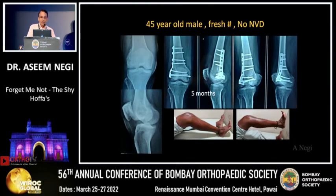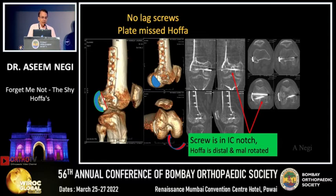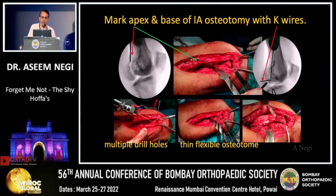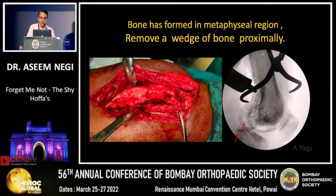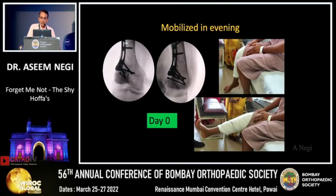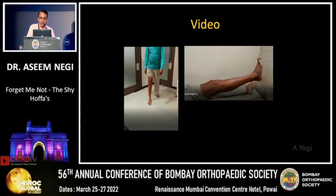A 45-year-old male — same story. No lag screws for the Hoffa, the plate missed the Hoffa element entirely, screws in the intercondylar notch. I do revisions in the lateral position, release quadriceps to achieve full flexion even before removing the implant, mark the apex and base of the intra-articular osteotomy with K-wire, remove a wedge of bone proximally, pull the Hoffa proximally, push it up with a periosteum from below, clamp it, lag it, plate it.